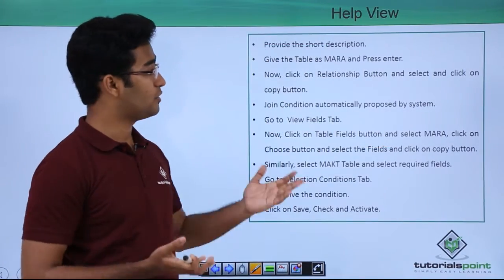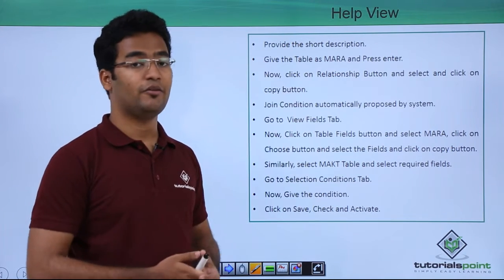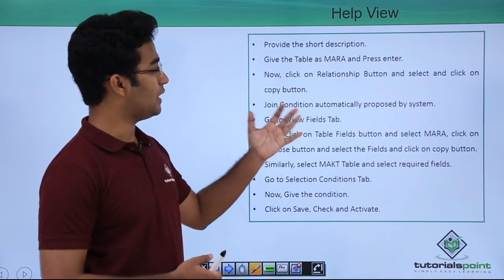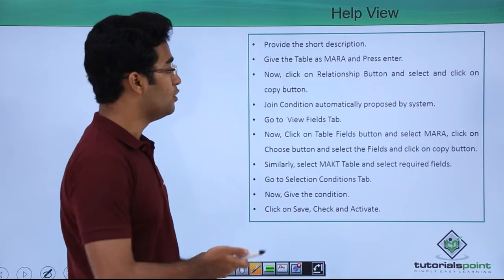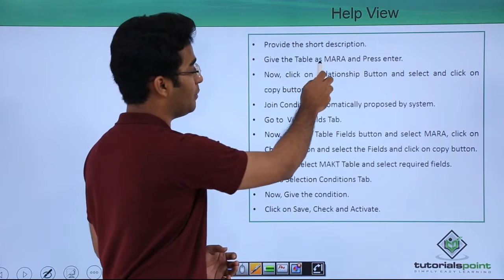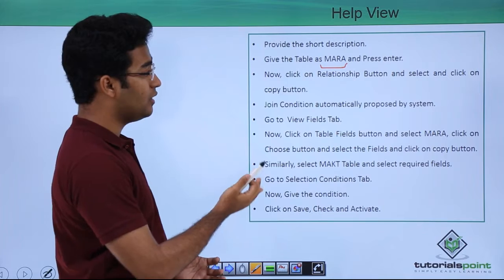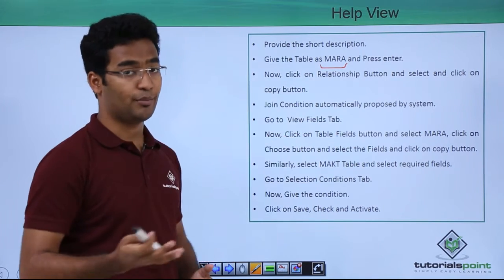Then we have to provide a short description. This short description can be a meaningful description. Then we have to give the table name as MARA and press enter. In this case we are using the table name as MARA. Now click on the relationship button and select and click on copy button.